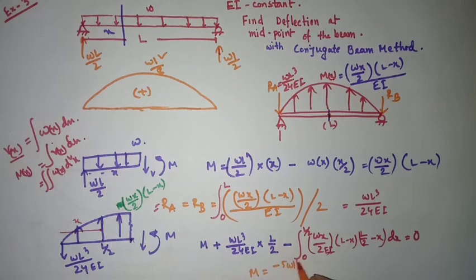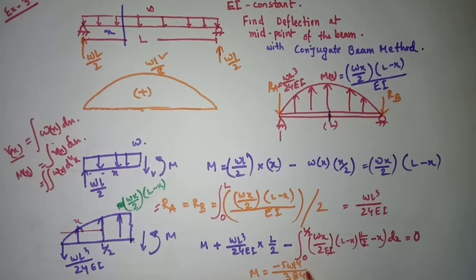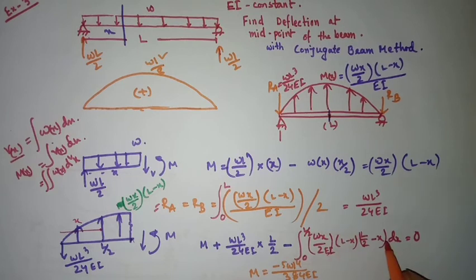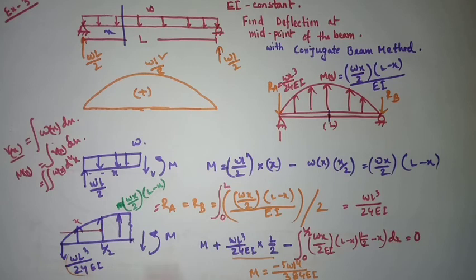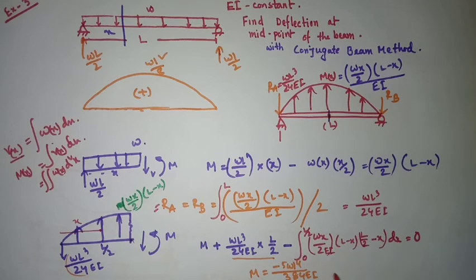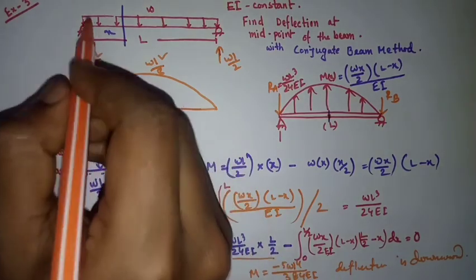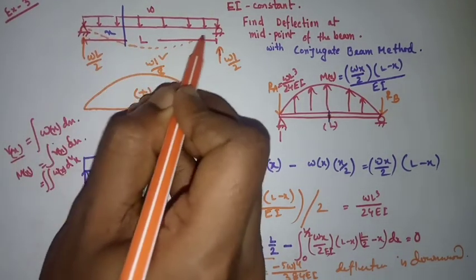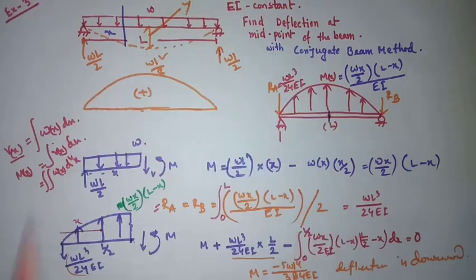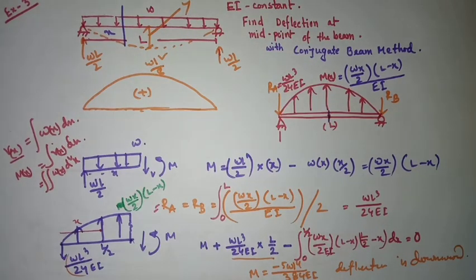Finally, the value will be minus 5ωL⁴/384EI. You can calculate from this — the integration is straightforward. This is the moment result, and this is negative, so the deflection is downward. The deflection will be like this — this is y or deflection. This is how you can calculate the deflection for a beam loaded with a distributed load using the conjugate beam method. Thank you for watching this video.